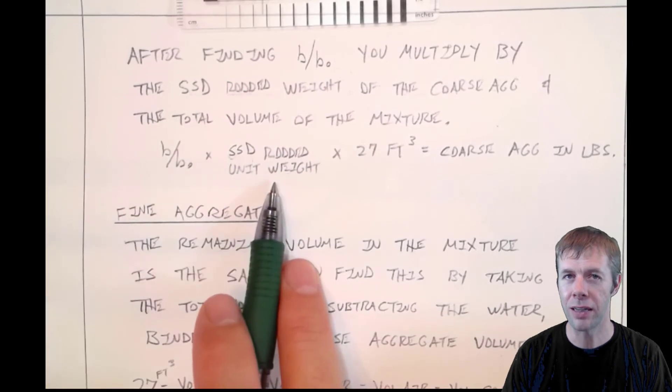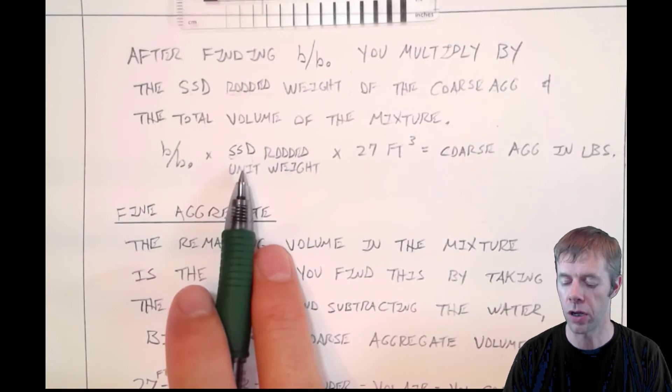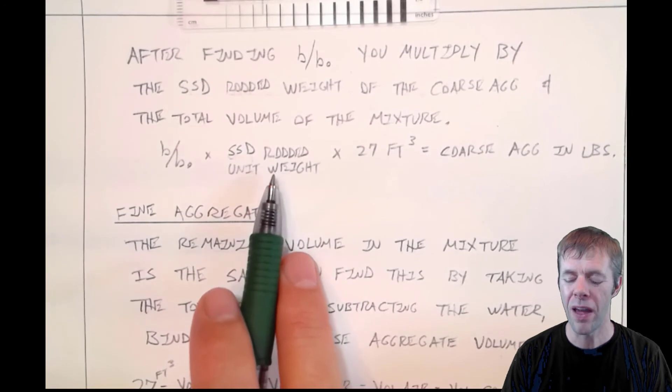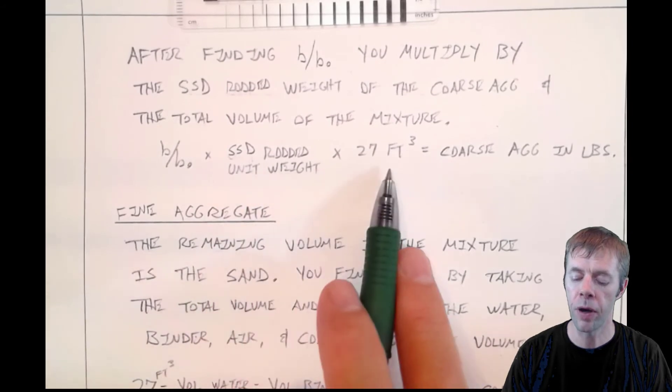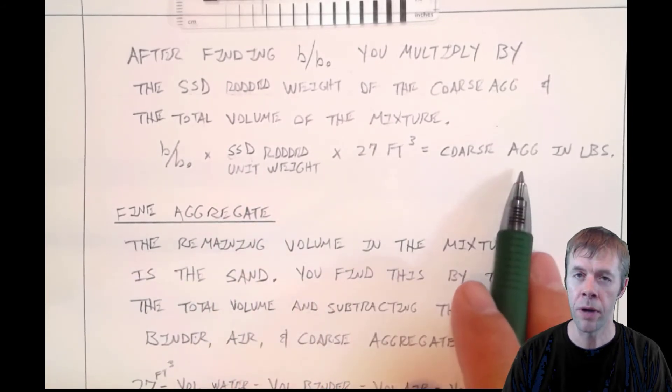You multiply it by the SSD rodded unit weight—that's the saturated surface dry of your aggregate in your concrete mixture. That number's about a hundred pounds per cubic foot typically. You're going to multiply that by 27 cubic feet, and that's going to give you the total amount of coarse aggregate that you'll use in pounds.